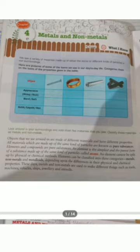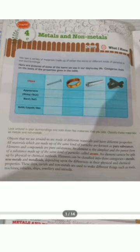Metals and non-metals is basically the continuation of the chapter on matter and chemical formulae that you studied in your seventh standard. There we discussed the classification and the basic differences between an element, a molecule, and an atom. Elements are the basic units, and we have classified them into three categories: metals, non-metals, and metalloids.